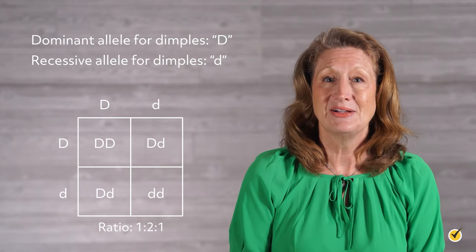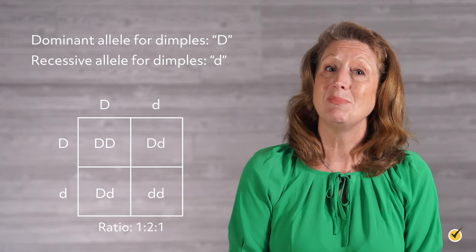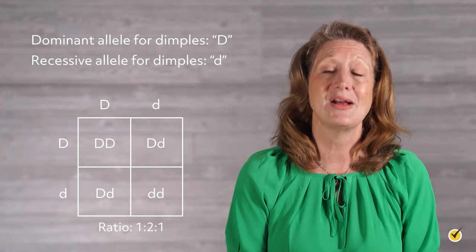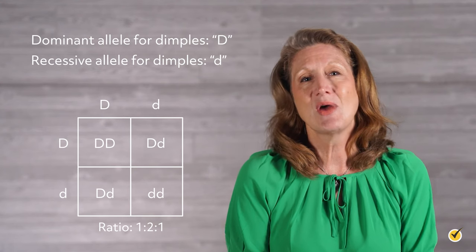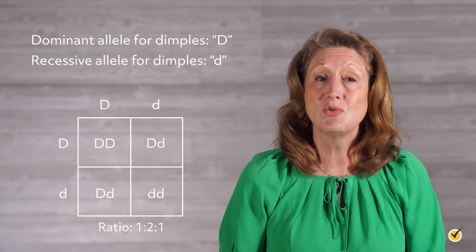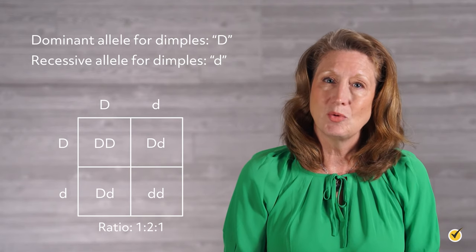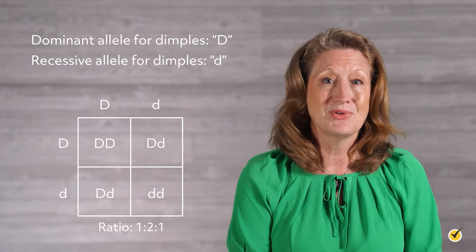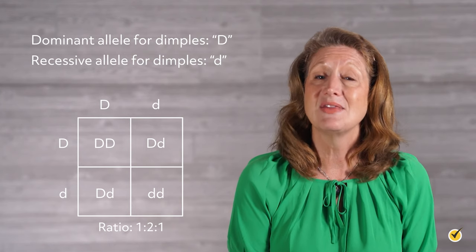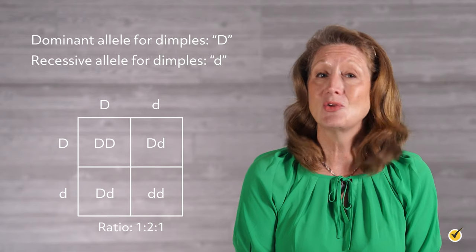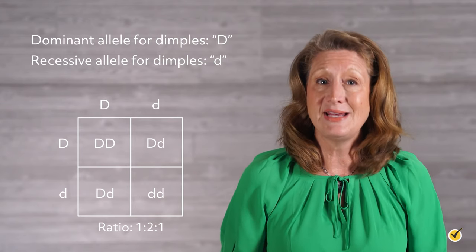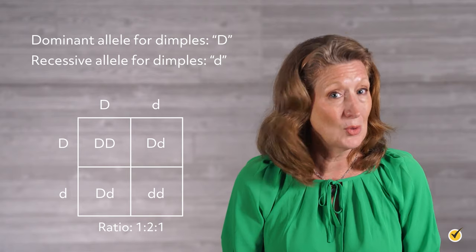Since the dominant allele is D, offspring with genotypes DD and Dd will all have dimples because the D allele overrides the recessive allele. We also have one homozygous recessive offspring where there is no dominant allele, so this combination will yield no dimples. We can say the phenotypic ratio is 3 to 1, dimples to no dimples. We can also say that 75% of the offspring will have dimples while 25% will not. This example shows how the genotype and phenotype, while related, can give us different but equally important information about inheritance.